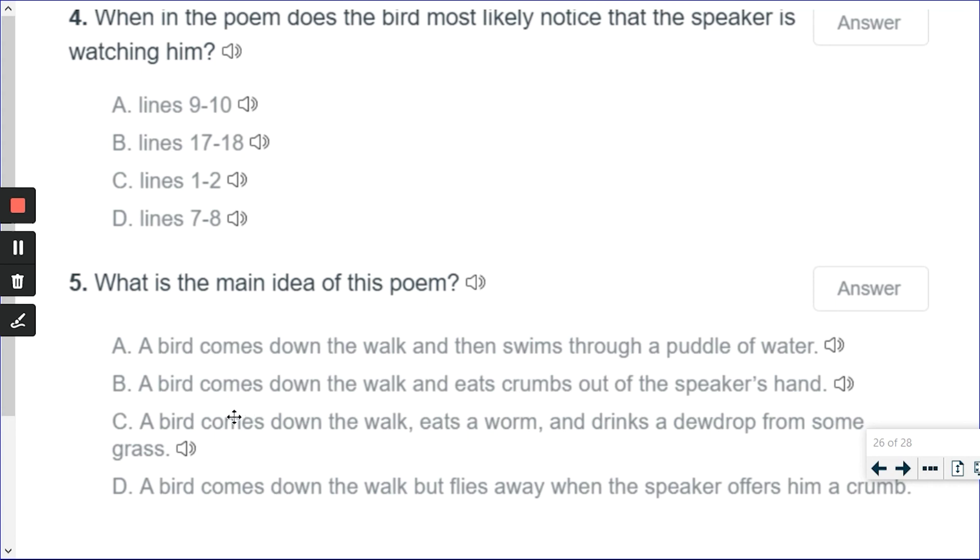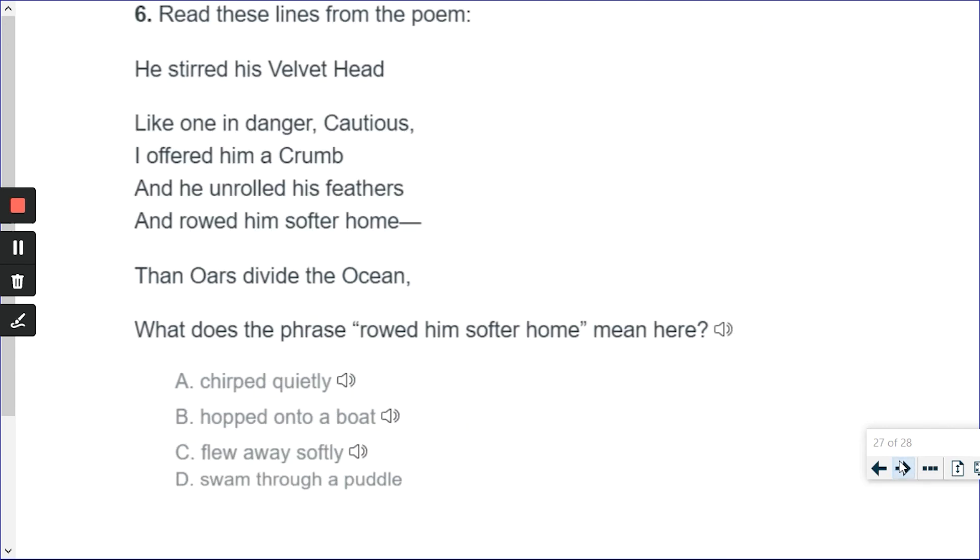A bird comes down the walk, eats a worm, drinks a dewdrop from some grass. Now, that's the closest one. However, it doesn't finish the poem. A bird comes down the walk but flies away when the speaker offers him a crumb. That is the best answer. Did you see how it had all parts of it?